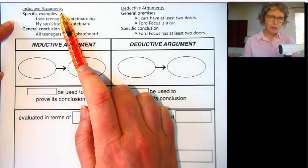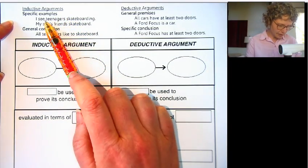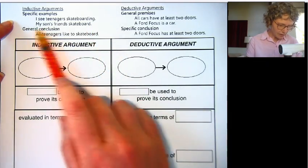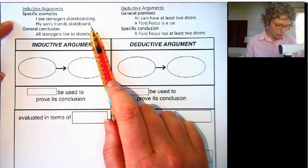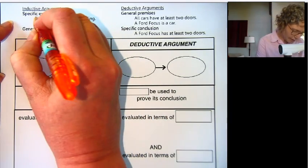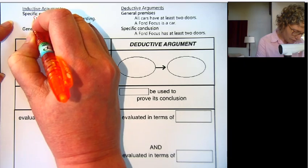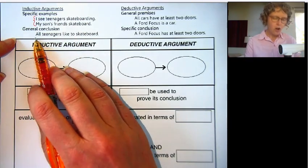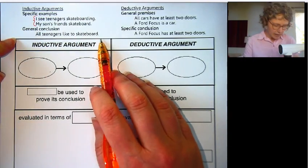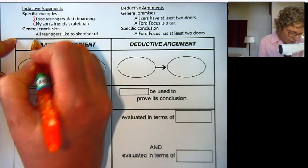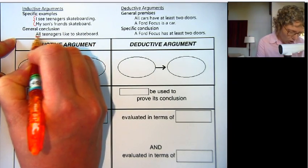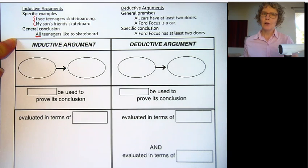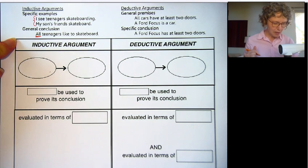Here's an inductive argument on the left. I see teenagers skateboarding. My son's friends skateboard. These are specific examples. Therefore, the conclusion: all teenagers like to skateboard. This is going to a general conclusion — all. Think that's true? All teenagers like to skateboard?